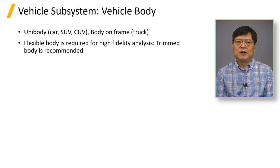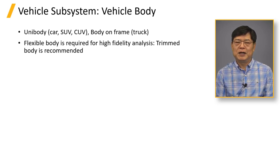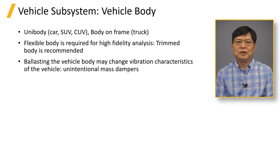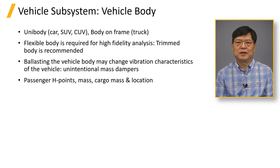A flexible vehicle body is required for high-fidelity analysis of durability event simulations, NVH analysis, and even some suspension compliance analysis. A trimmed body works well for multi-body dynamics analysis if data is available. A body-in-white is also acceptable, but it is challenging to balance the mass discrepancy between the physical vehicle and the BIW model. Adding mass at critical locations would serve as a mass damper, which significantly changes NVH responses. Passenger and cargo mass are attached at the passenger H-point and cargo or luggage location.